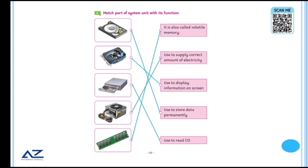Next, match part of system unit with its function. The first one is hard disk. Hard disk is used to store data permanently. Next one is VGA card. It is used to display information on screen. The next one is CD-ROM. CD-ROM is used to read CD. The next is power supply, used to supply correct amount of electricity. The last one is RAM. It is also called volatile memory.